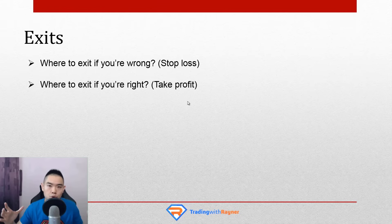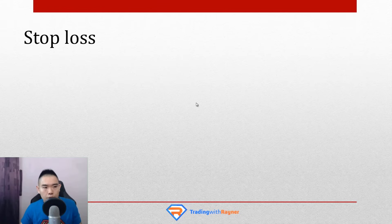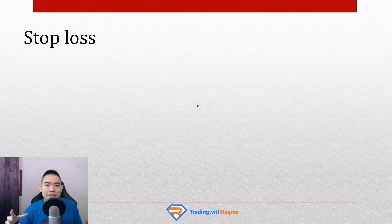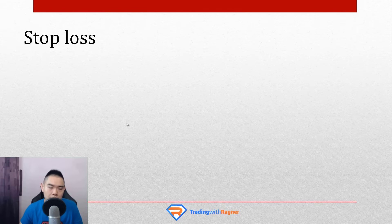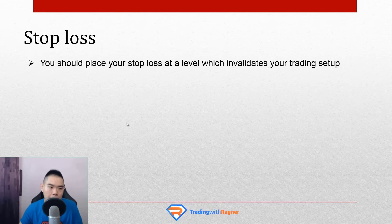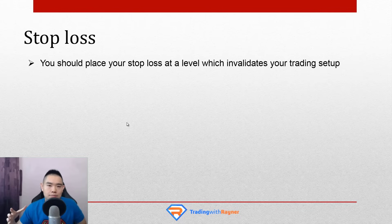When you're trading, where do you set a proper stop loss so you don't get stopped out too early? I only have one technique, and this one technique serves my trading to set a proper stop loss. The technique is based on this concept: you should place your stop loss at the level which invalidates your trading setup.